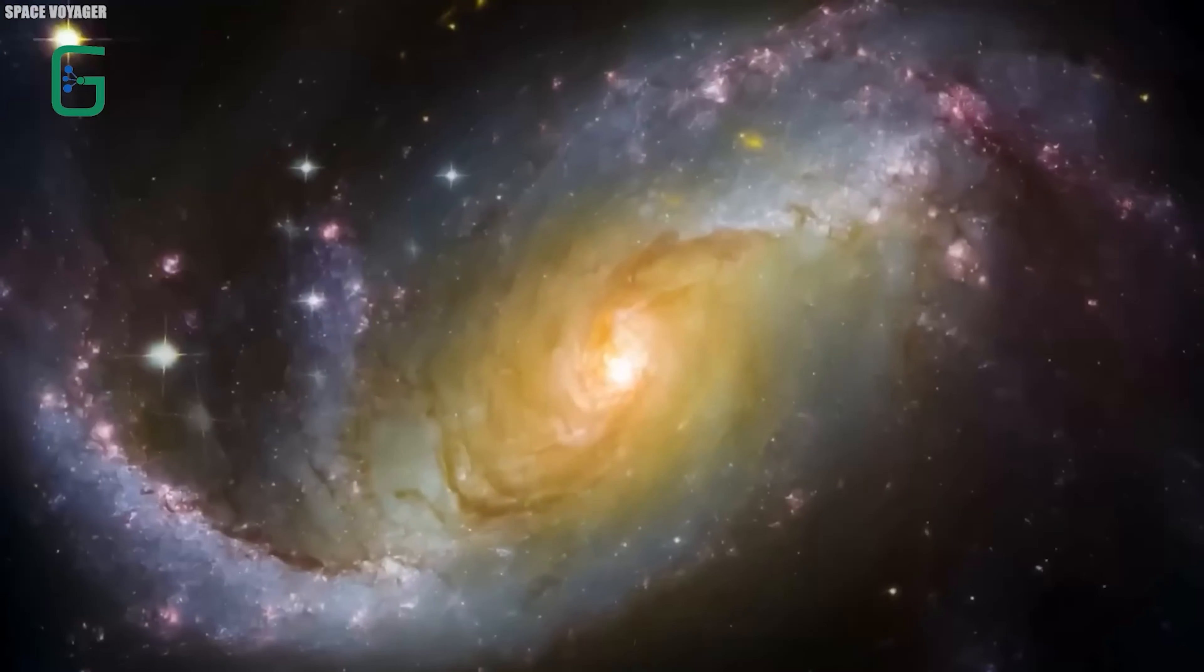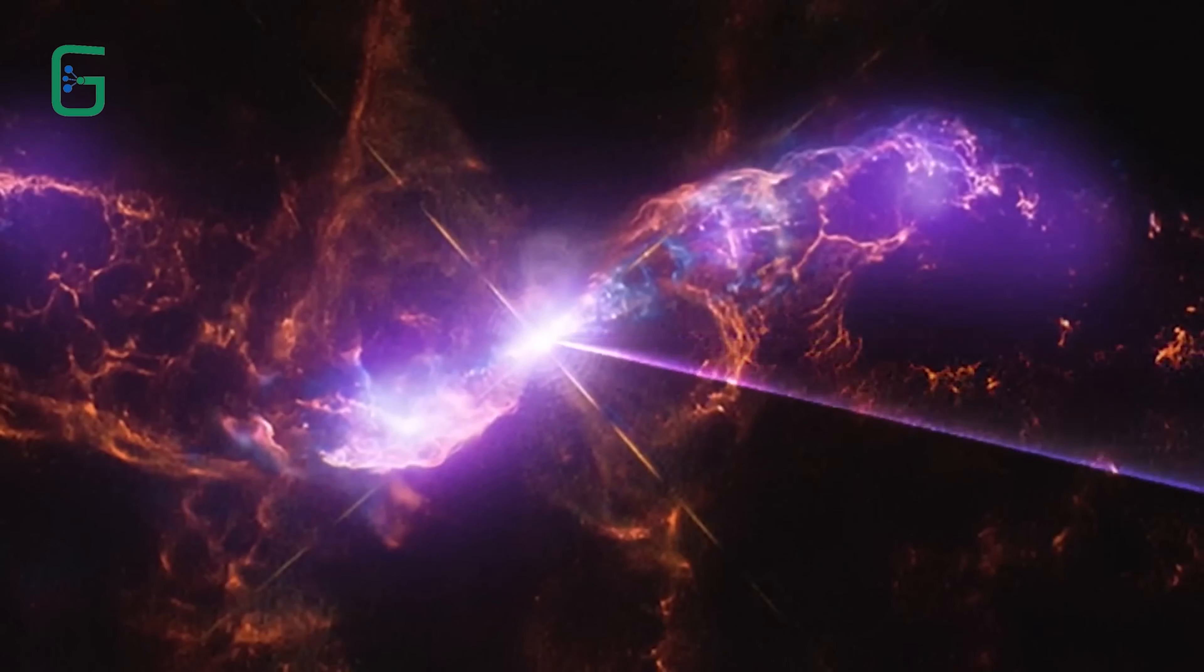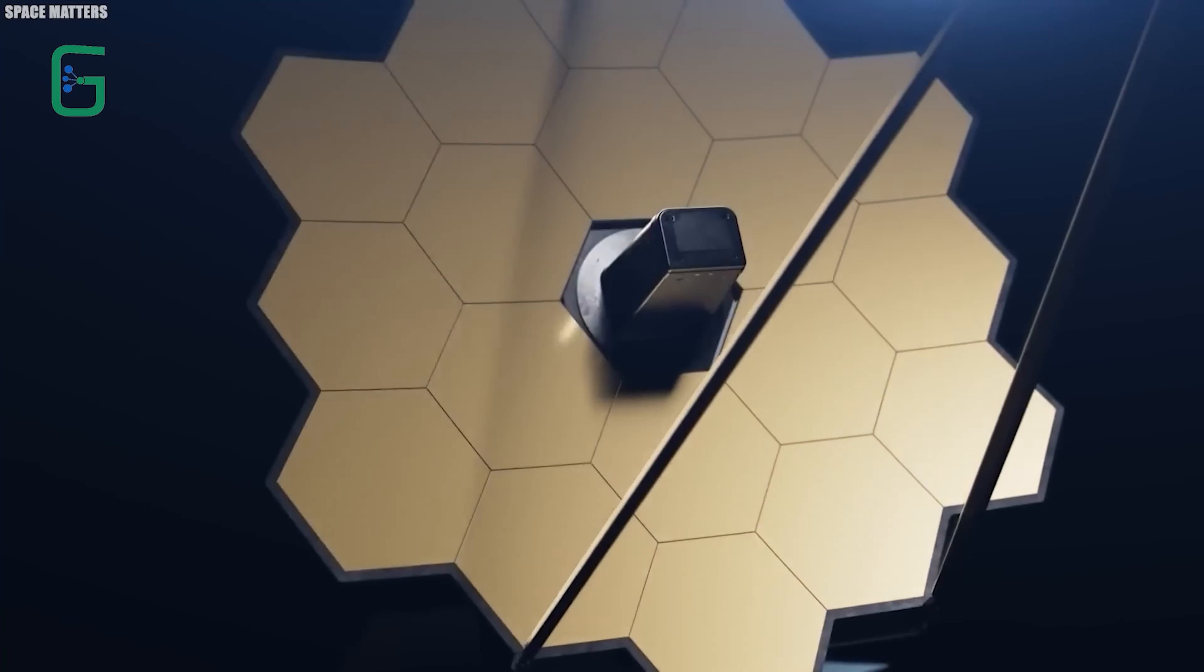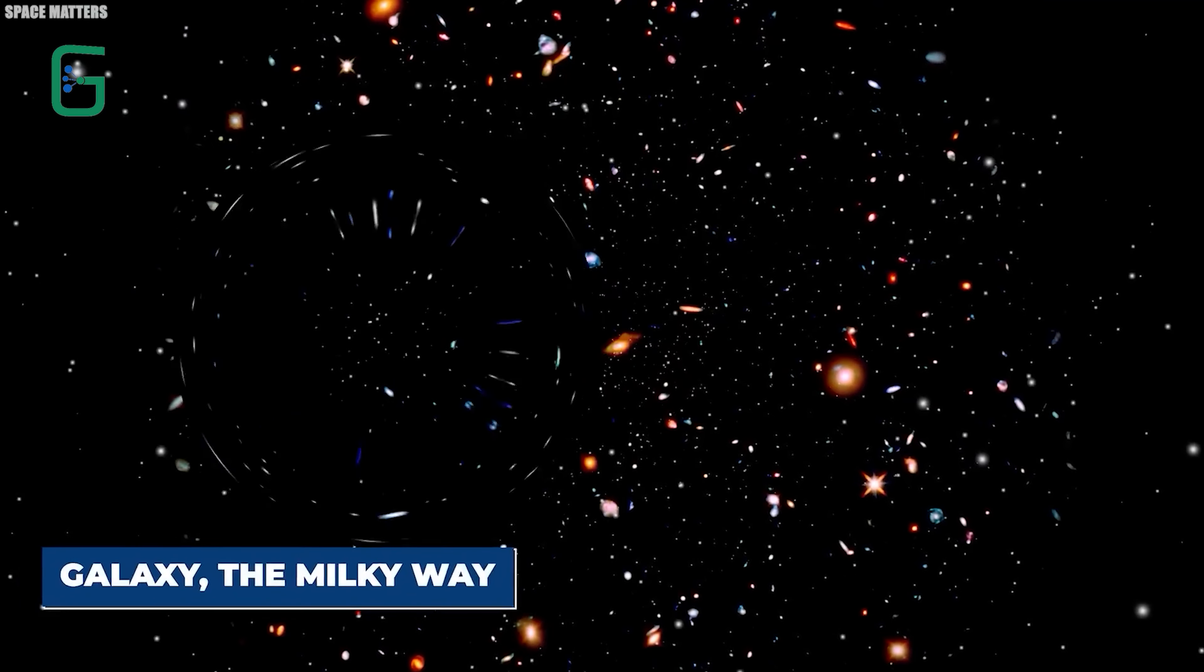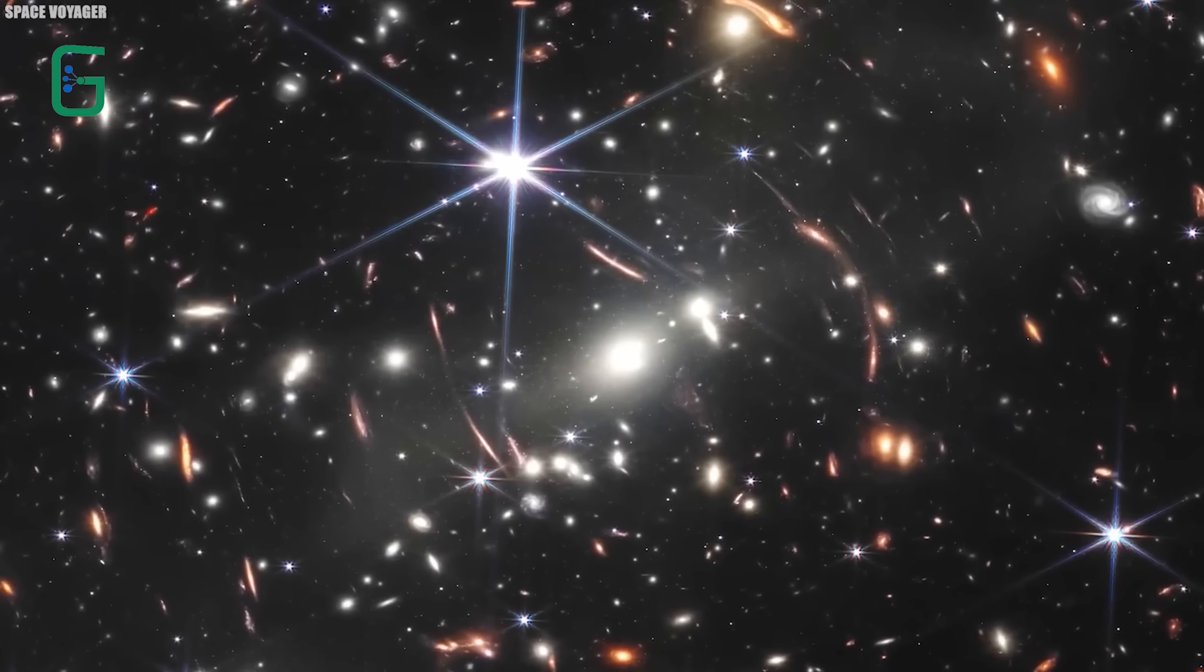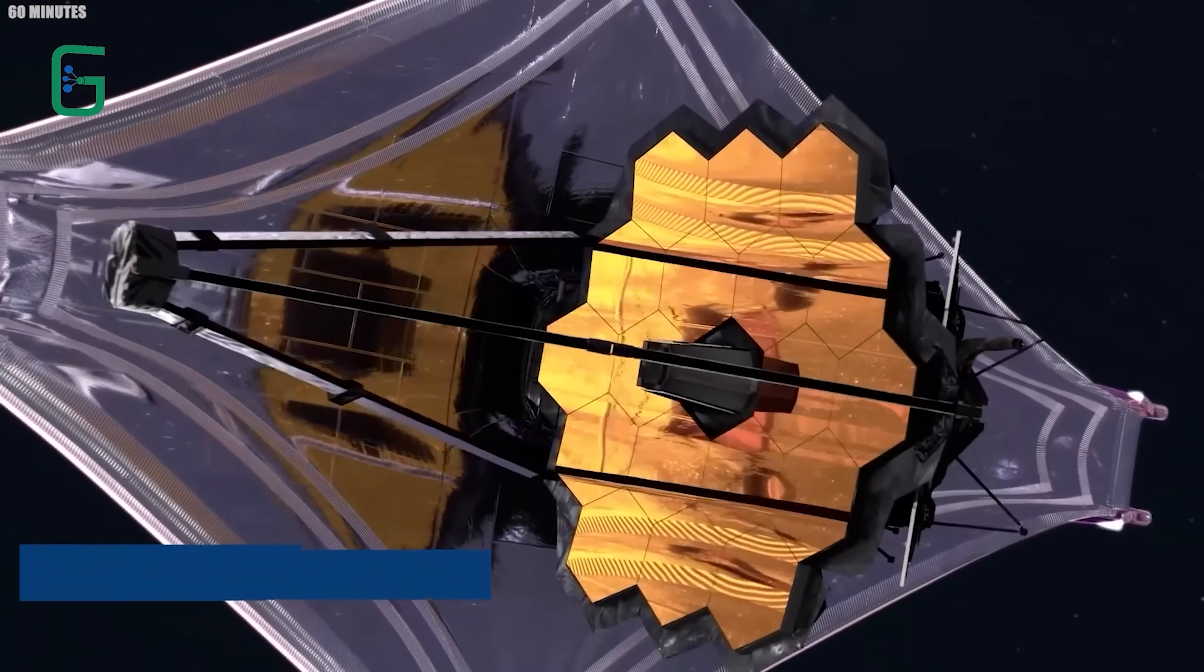Knowing how Andromeda is put together and what it's made of helps scientists learn more about the whole universe. It's like having a big puzzle. Understanding Andromeda is like finding a piece that helps them see the bigger picture. Plus, it's like having a twin galaxy, the Milky Way, so they can compare them and figure out how galaxies form and change over time.